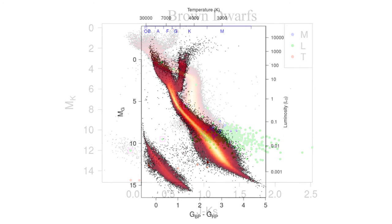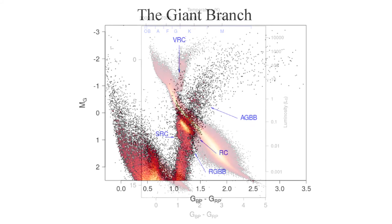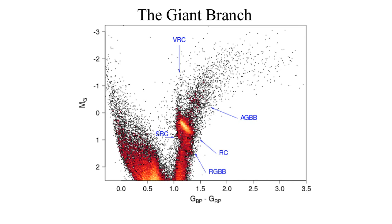On this 200 parsec HR diagram, the red giant branch looks small on this scale. But when you zoom in, you see that actually there are lots of details here. The Sharpley-Pollman's red clamp, the secondary red clamp,